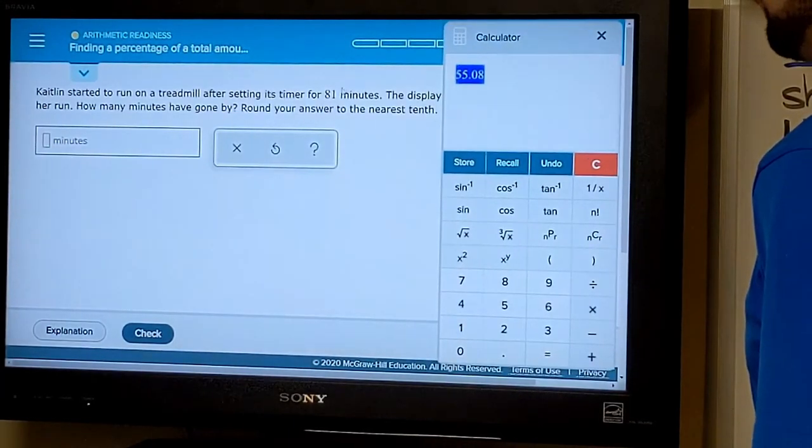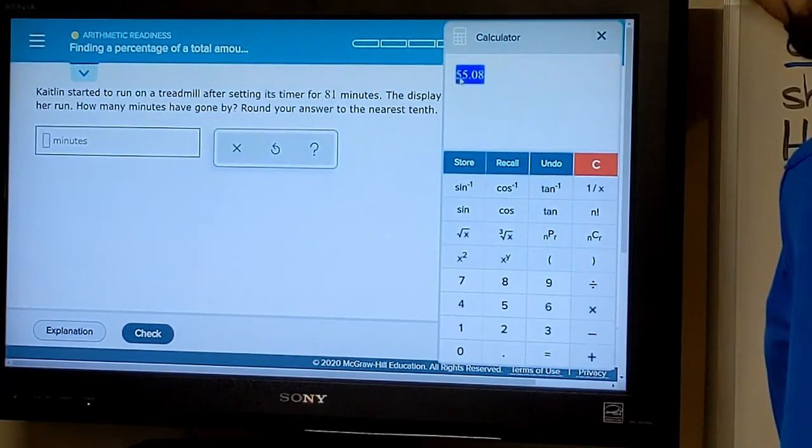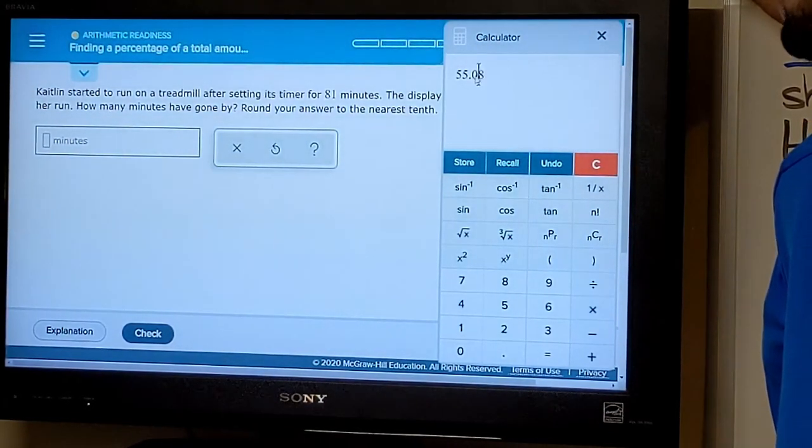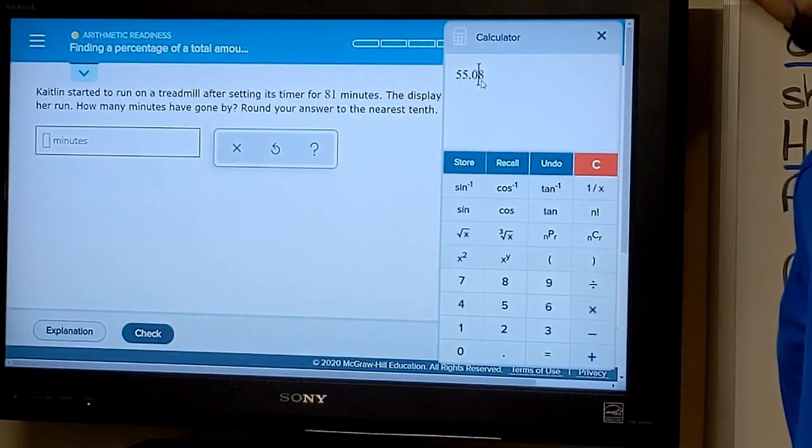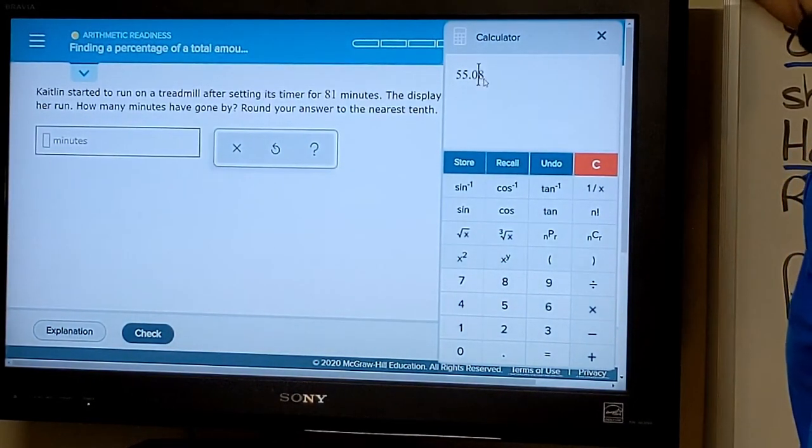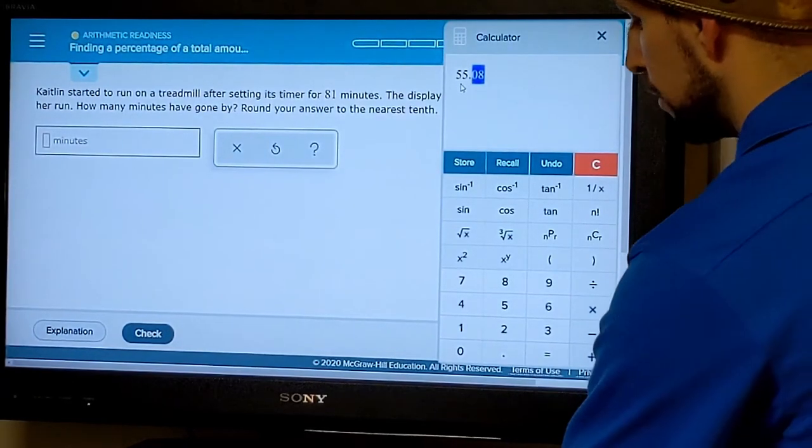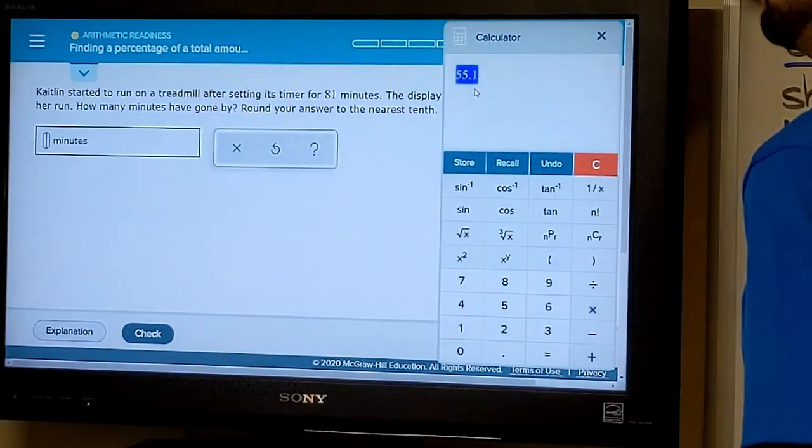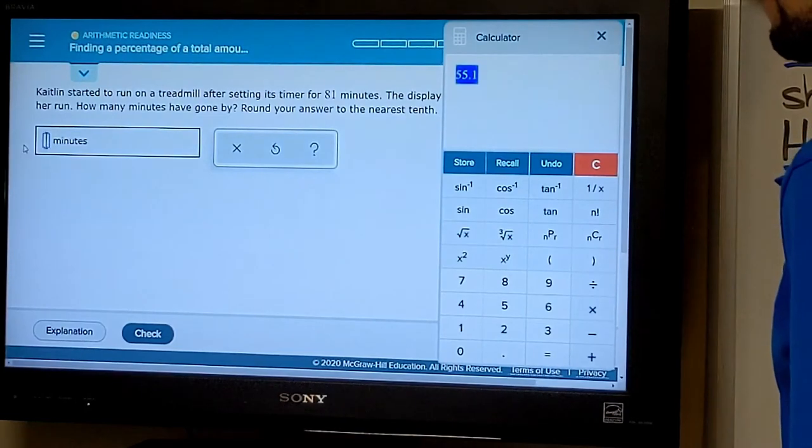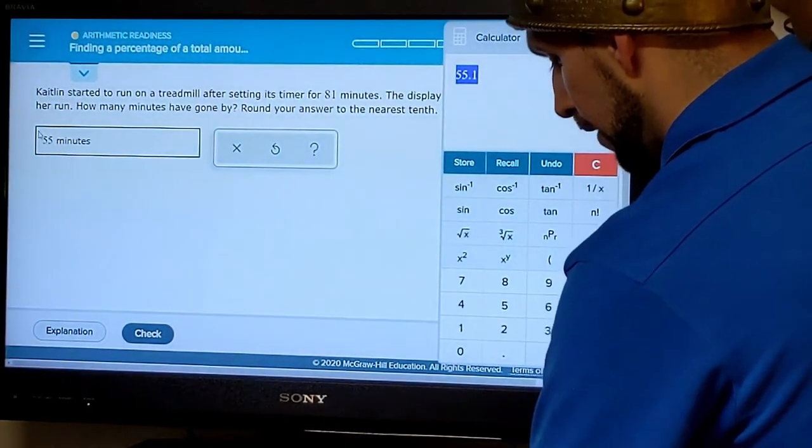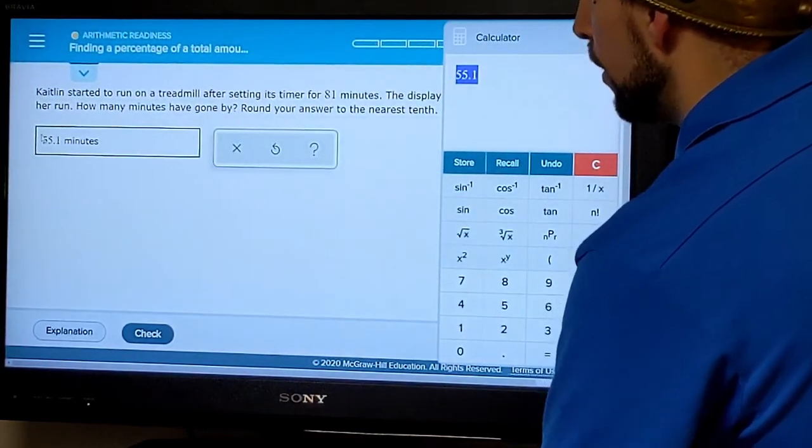Now you'll notice I have an answer here, but did I answer the question? Well, we wanted to round our answer to the nearest tenth. So before we submit this, we want to round this to the nearest tenth. Here's the tenth digit, so we're going to look to the right and note that that is five or more, so this is going to round up to 55.1. Let's go ahead and put this in as our answer: 55.1 minutes.